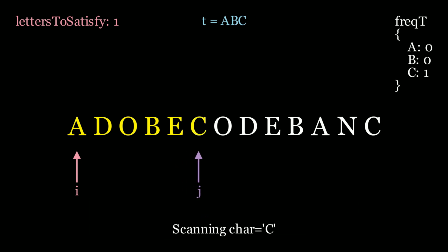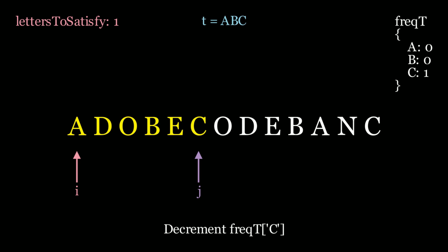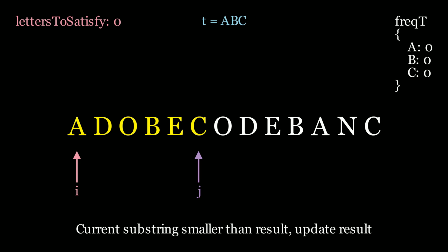Now we go to the next element, which is e. Is e in my frequency table? No, so I simply move along. Next is c — c is in my frequency table. We decrement the count from 1 to 0, and since it's 0 we decrement letters to satisfy. Letters to satisfy goes from 1 to 0. We satisfied all the letters because letters to satisfy is 0, meaning our current string has all the same characters as t. We update the result — the current result is a, d, o, b, e, c.